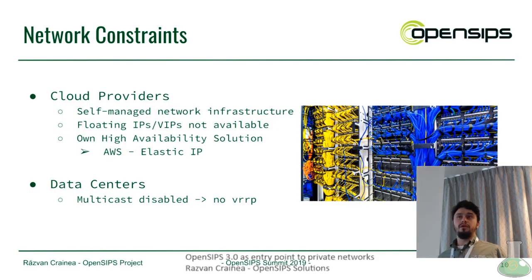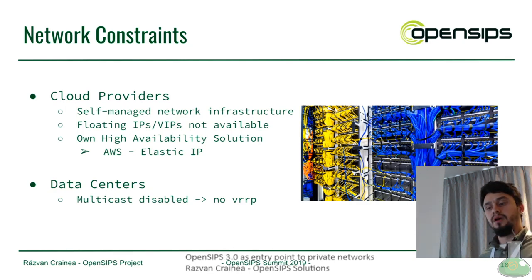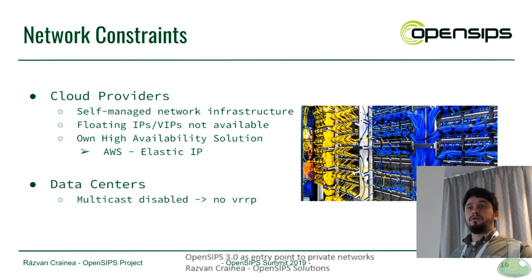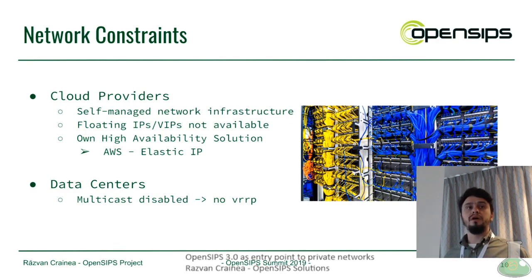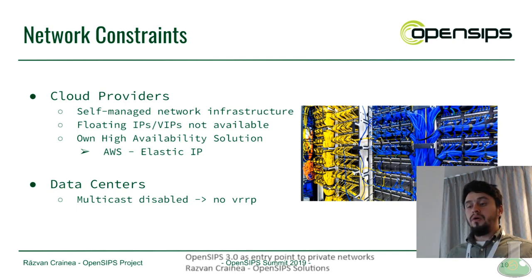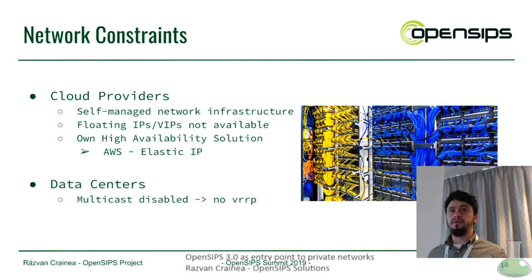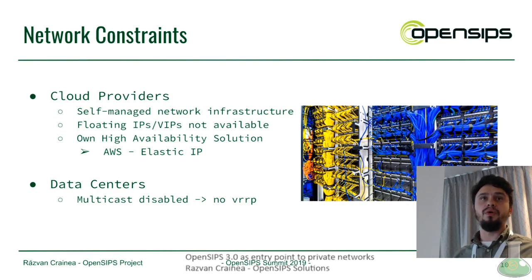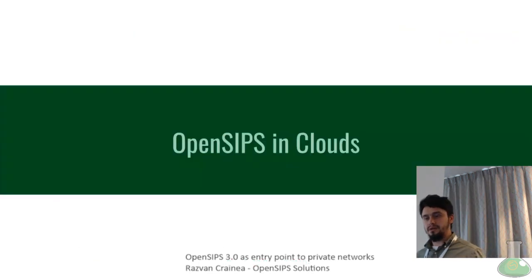What if you are running in an environment with network constraints? For example, cloud providers have their own self-managed network infrastructure. There are cloud providers where floating or virtual IPs are not available because they block multicast, or even data centers that block multicast, so you really can't set up a VRRP statement to manage the VIP. Or there are cloud providers using their own HA solution — in AWS, for example, we have the Elastic IP feature, which works differently from VRRP.